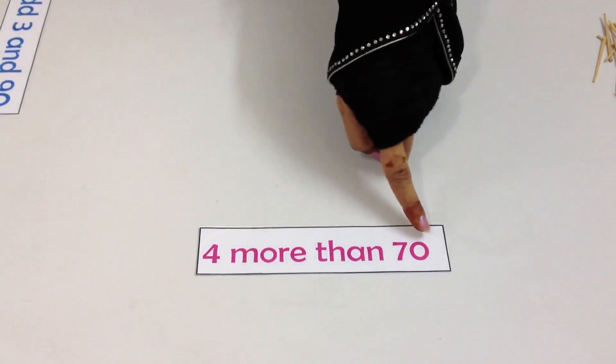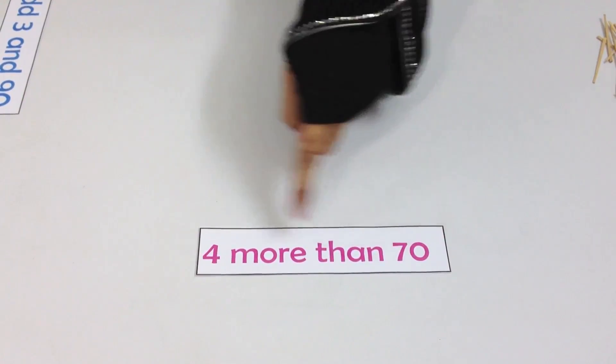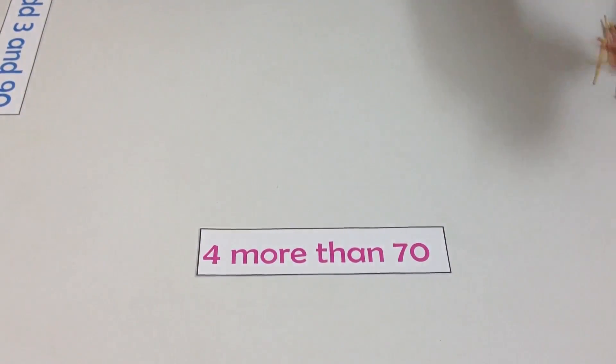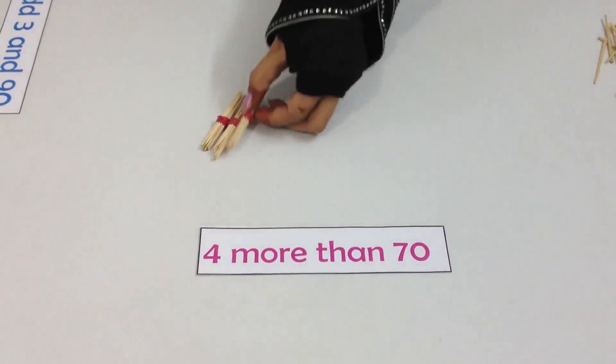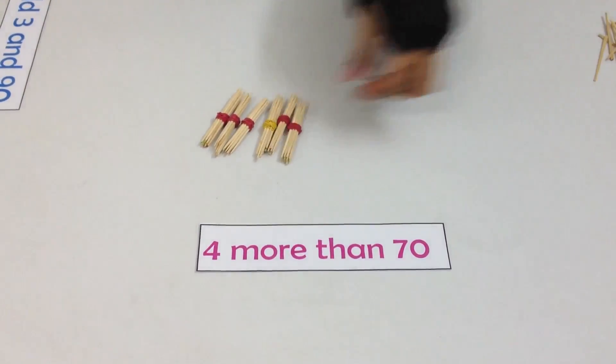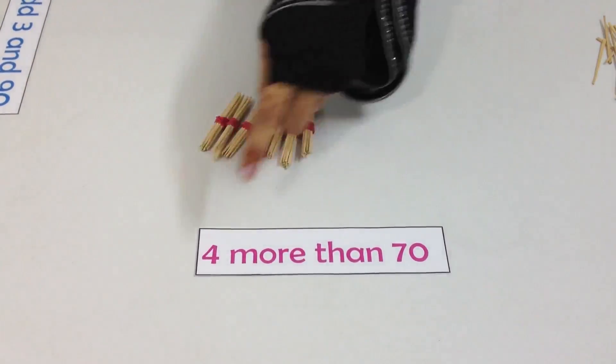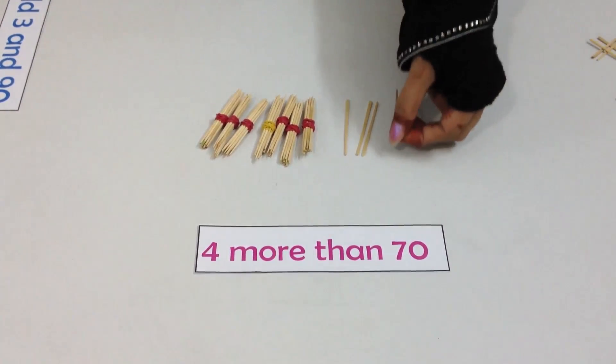Four more than 70. Here we have to make 70 first, and then we have to add four more in that. To make 70, we have seven bundles of tens: 10, 20, 30, 40, 50, 60, and 70. Now we need four more, so we have 71, 72, 73, and 74.